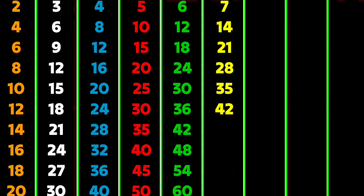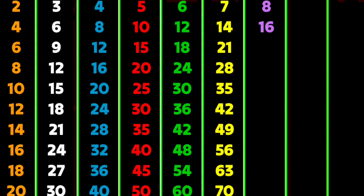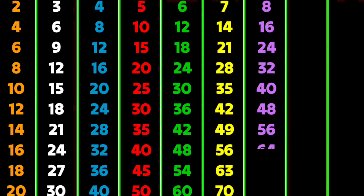Table of 8. 8 1's are 8, 8 2's are 16, 8 3's are 24, 8 4's are 32, 8 5's are 40, 8 6's are 48, 8 7's are 56, 8 8's are 64, 8 9's are 72, 8 10's are 80. Table of 9.